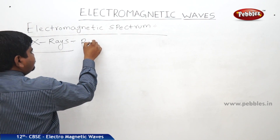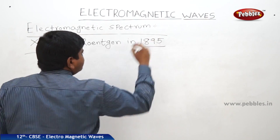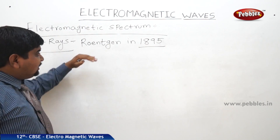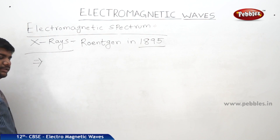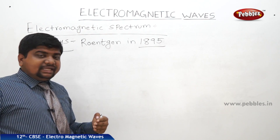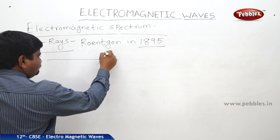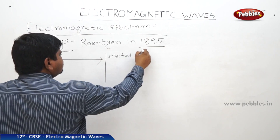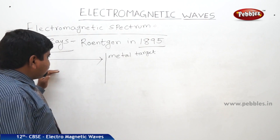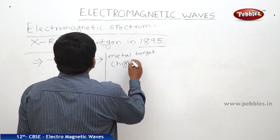X-rays were discovered by Roentgen in 1895. Roentgen is the first Nobel laureate in physics. In 1895, when he was studying cathode rays coming out of a photosensitive material, these cathode rays were completely stopped by metal targets having high melting points. The absorption of cathode rays by a metal target of high melting point is the main way to produce X-rays.